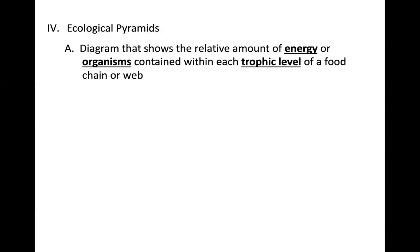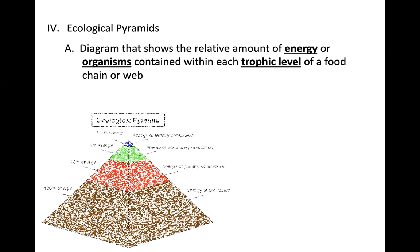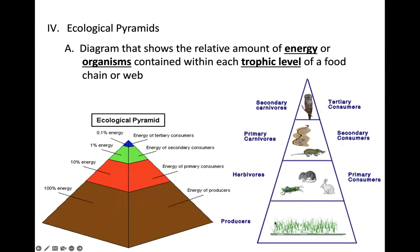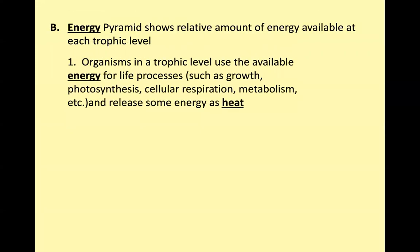Ecological pyramids are diagrams we use to show the relative amount of energy that organisms contain within each of the trophic levels in the food chain or food web. We've got producers at the bottom, then primary, secondary, and tertiary consumers. The most energy is contained at the producer level, and there is a transfer of energy that includes a loss. This energy transfer is not very efficient — there's only a 10 percent transfer of energy from one trophic level to the next. Make sure you write that down.